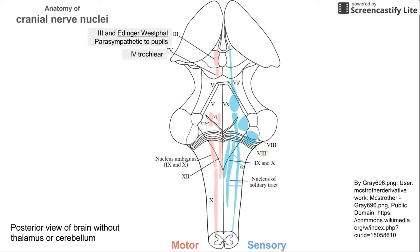Right below that is the trochlear nerve nucleus — cranial nerve four. Cranial nerve five is one of the big ones; it has motor and sensory function, and those nuclei are right below cranial nerve four. Cranial nerve six is below that, and under cranial nerve six is cranial nerve seven. These are easy to remember: going from higher to lower in the brainstem, you have three, four, five, six, and seven — mostly motor nerves, with the exception of cranial nerve five, which has a sensory component as well.